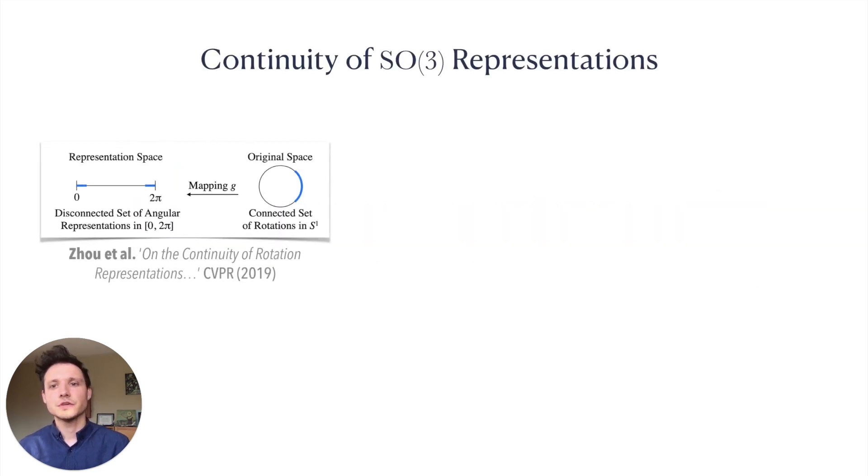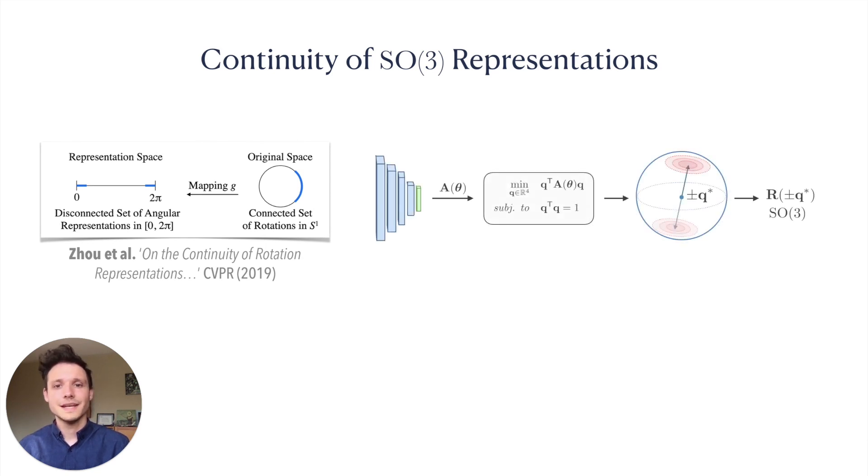Now what does it mean for our representation to be smooth? In a recent paper, Zhou et al. showed that the mapping G from SO3 matrices to another representation is important for learning. Namely, if such a mapping, called a section, is continuous, then this facilitates the learning of arbitrarily large rotation targets.